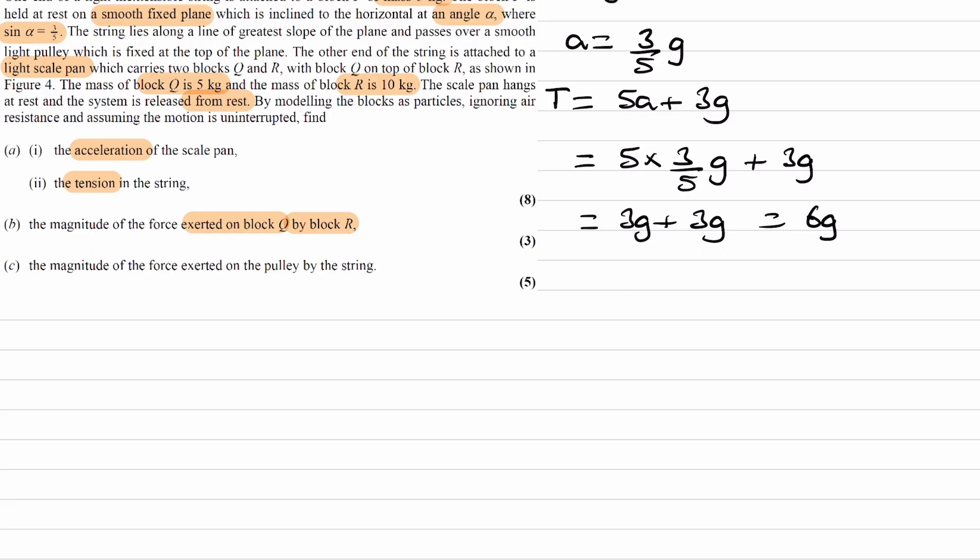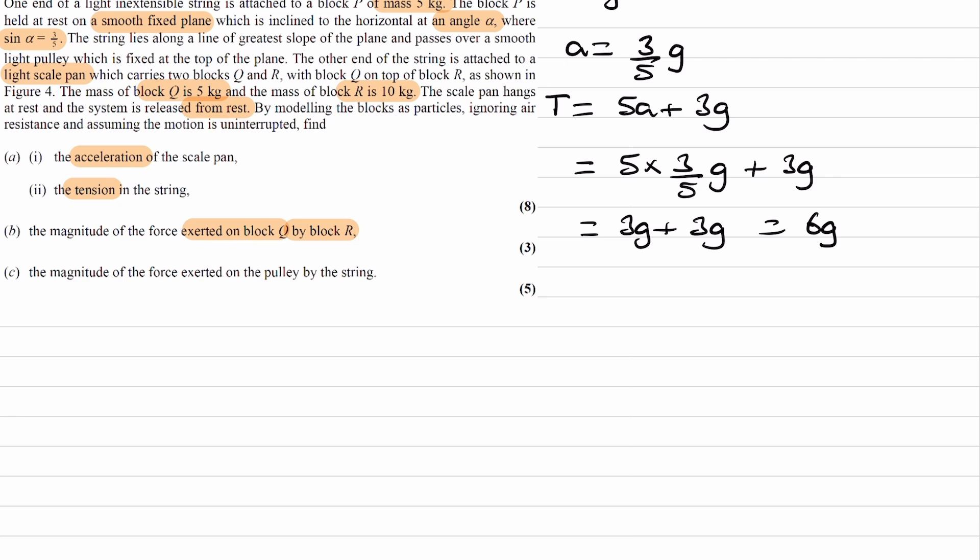Let's start with block Q. So, that's the one sitting atop block R, the one on top. So, here is that block. So, this is block Q. It has a weight force of 5G. Its mass is 5 kilograms. And it experiences an upward normal contact force from block R. Let's call that N or NR. It's the normal reaction force from block R. So, remember that block R is underneath block Q.